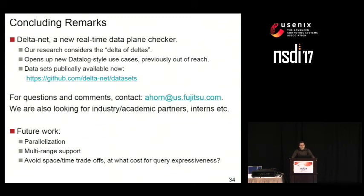To conclude, DeltaNet exploits the idea of overlap among deltas to significantly speed up answering Datalog-style queries within a real-time network verification framework — queries that were previously out of reach because they required recomputation of a lot of information. All our datasets are publicly available, and we are very interested to work with industry and academic partners, including interns, to further develop algorithms that help the community deal with network complexity from the perspective of formal methods. With that, I'm opening up for questions.